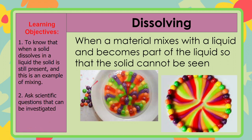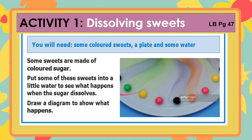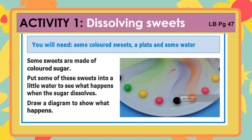This is a picture of colored candies mixed in water. Observe the dissolving colored sugar carefully, then draw a diagram that shows what happened. Write some words including the different colors and the sizes of the candies. In this activity, you will need some colored sweets, a plate, and some water. Some sweets are made of colored sugar, so put some of the sweets into a little water to see what happens when the sugar dissolves. Then draw a diagram to show what happens. At the end of the activity, observe the remaining parts of the sweets and describe where the missing colored sugar is now. Has the sugar disappeared?